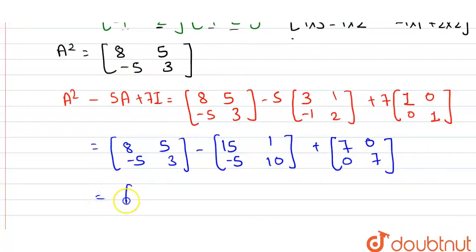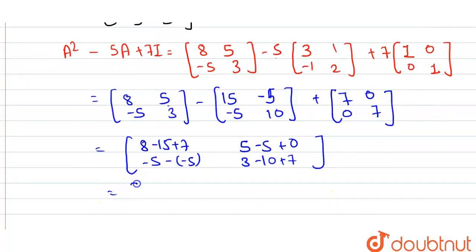Now the addition will give 8 minus 15 plus 7. Here 5 and here when minus 5 multiply with 1 will give minus 5, so 5 minus 5 and here value is 0. Similarly here is minus 5 and negative of negative 5, and here the value is 3 minus 10 plus 7.